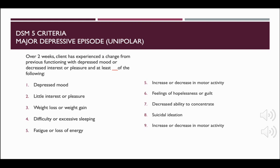The DSM-5 criteria for major depressive episode — considered unipolar depression — requires that over two weeks the client has experienced a change from previous functioning with depressed mood or decreased interest or pleasure, and at least five of the following symptoms: depressed mood most of the day nearly every day, where the individual might say they feel sad, empty, or hopeless; diminished interest or pleasure in almost all activities most of the day; significant weight loss when not dieting or weight gain — a change of more than 5% of body weight. In children, this would be a failure to make expected weight gain.